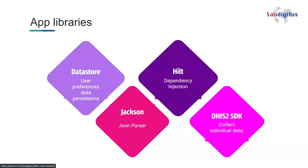About the libraries we used — we didn't use a lot of them. We used the DHIS2 SDK, which is the tool to collect individual data. We use it to keep our database in the background so we can implement the same synchronization and upload structure. We also used Hilt for dependency injection, Jackson for JSON parsing, and DataStore to store user preferences.